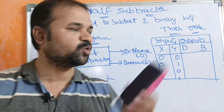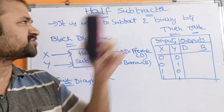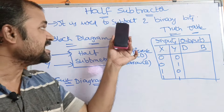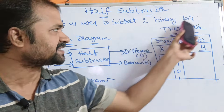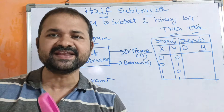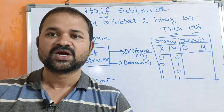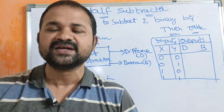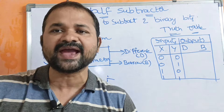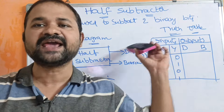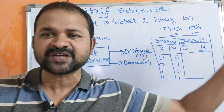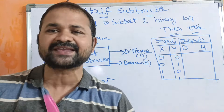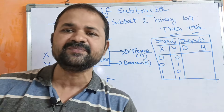Now let us discuss the half subtractor. It is mainly useful in order to subtract two binary bits. We know that half adder is mainly useful in order to add two binary bits. Likewise, half subtractor is useful in order to subtract two binary bits.